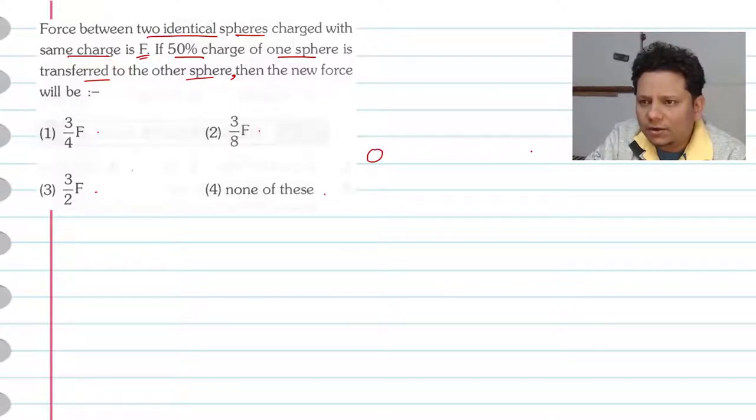So here we have one sphere and at a distance, another sphere placed here. On this one, let's say the charge is Q, on this one the charge is Q, and the distance between them, let's say this is R.